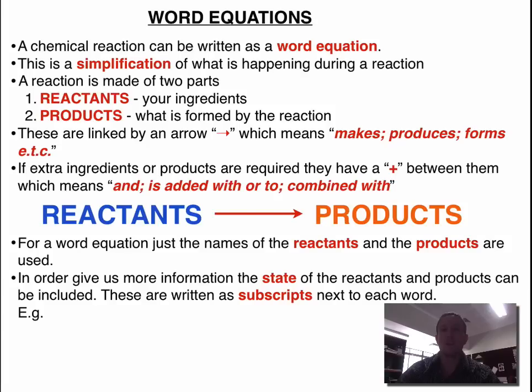Often we can also write the state at which the reactants and products are in. This becomes useful as we move higher up through our chemistry. There are four main states that we deal with.